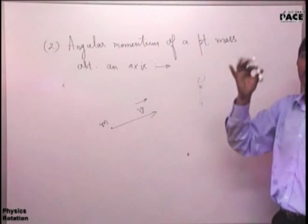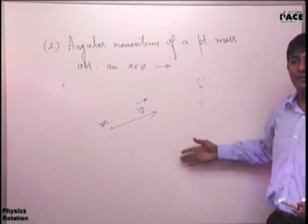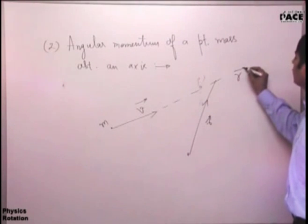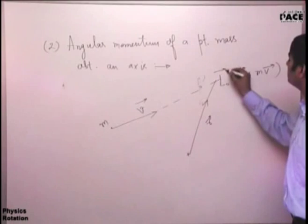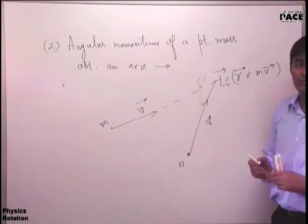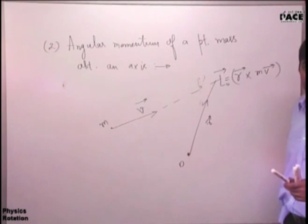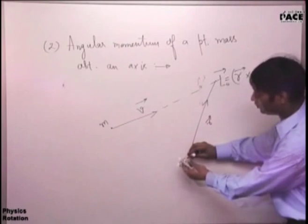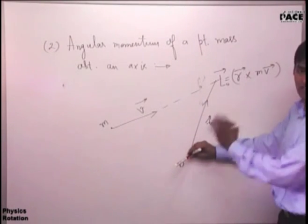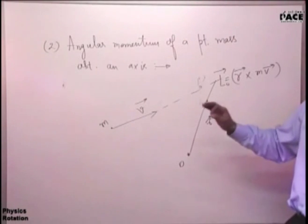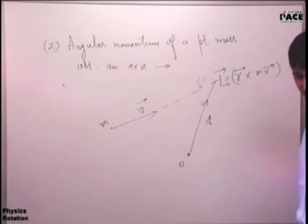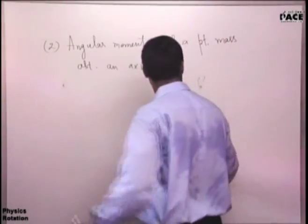Now let's talk about angular momentum about an axis. What do we do? We take a point on the axis — say this point. We find the angular momentum L_O about that point as before. Then, if the angle between L_O and the axis is φ, we take the component L_O cosφ along that axis. That component gives you the angular momentum of the point mass about that axis.